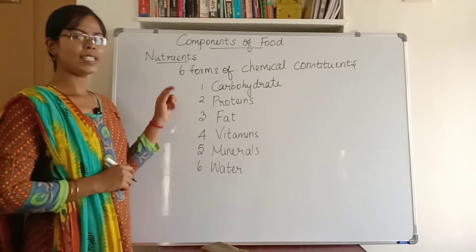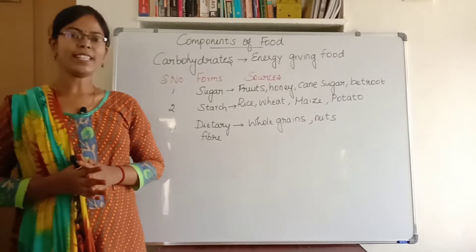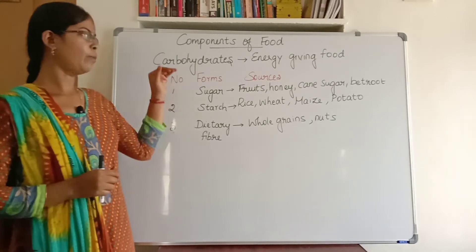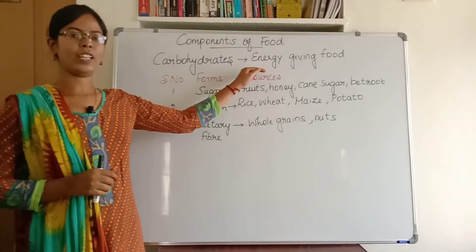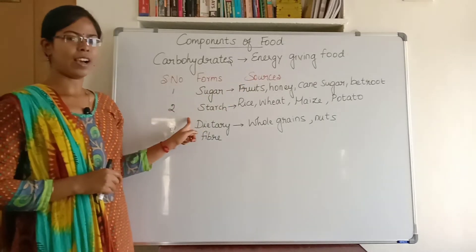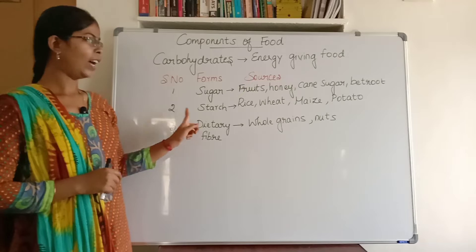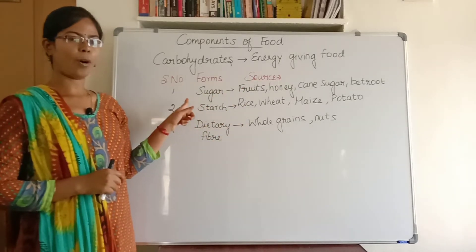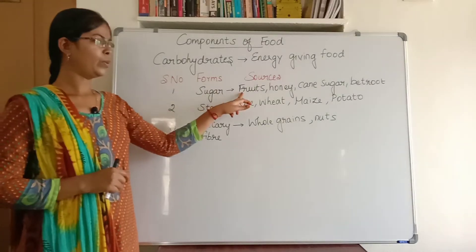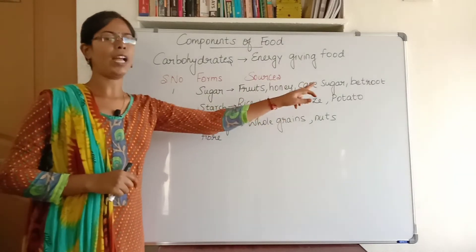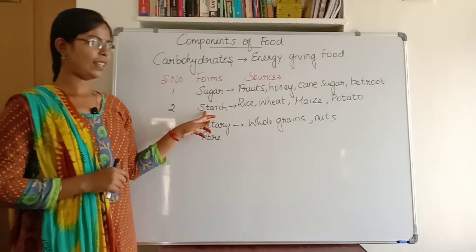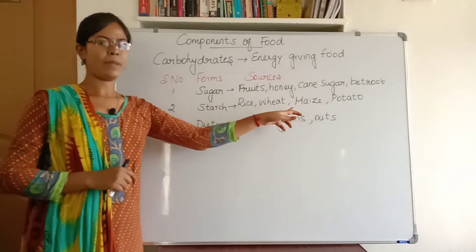Now let us see about carbohydrates in detail. We have already seen that the food we consume should give us energy, and carbohydrates in food serve this purpose. The various forms of carbohydrates are sugar, starch, and dietary fiber. Sugar can be seen in fruits, honey, cane sugar, and beetroot. The starch form of carbohydrates can be seen in rice, wheat, maize, and potato.